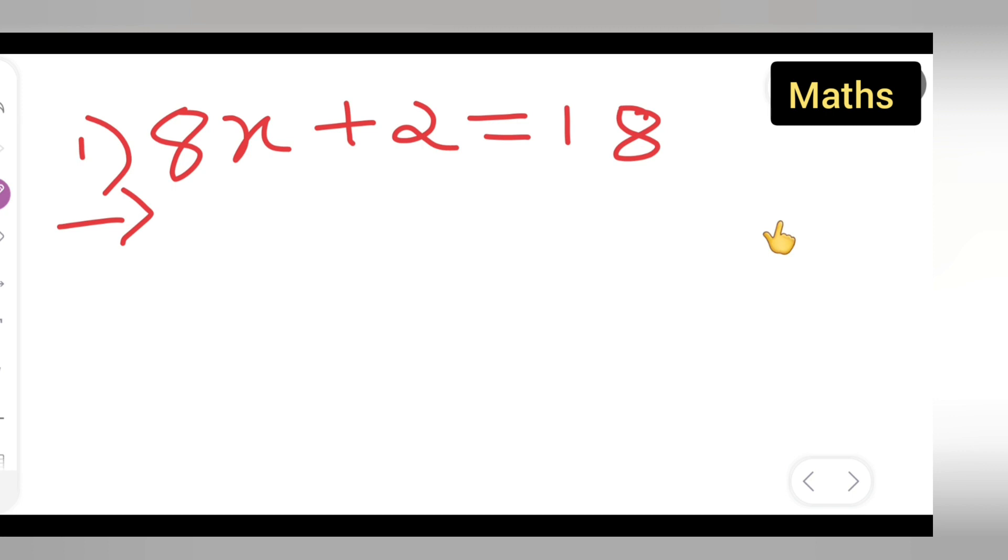Now how you all are going to do this: write this 8x as it is. 8x is equal to 18. Take this other side so it will become minus 2. So you can write down 8x is equal to 18 minus 2.